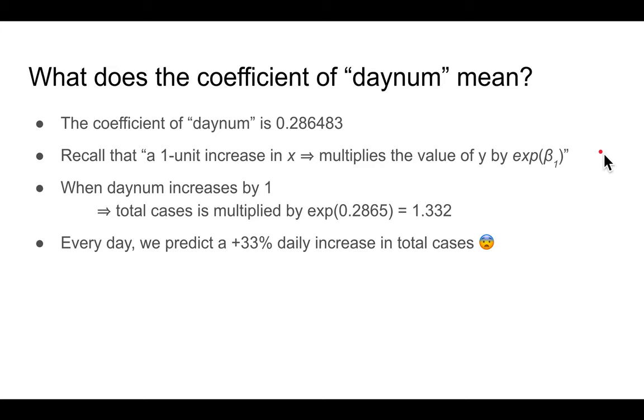In this case, we have the estimated coefficients. They are all statistically significant, and the R squared is super high, which is not surprising at all, given that the data almost exactly fits into a straight line. All right. So what does the day-num coefficient mean? So basically, if you look at the table, the day-num coefficient is 0.286483. And recalling the definition or what I explained earlier, basically, when you increase the day-num by 1, the total number of cases is multiplied by the exponential of 0.2865, which is roughly 1.332. So what this means is there's a roughly 33% daily increase in total cases per day. Yikes.